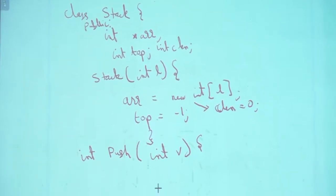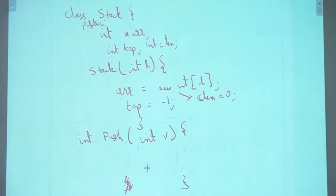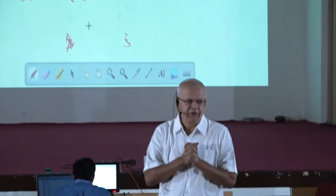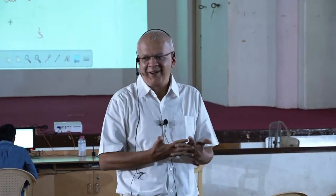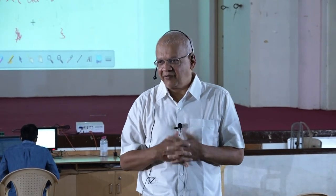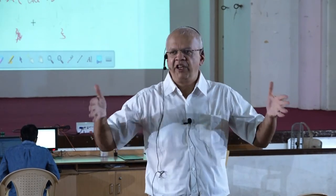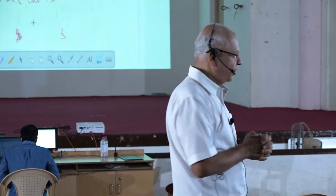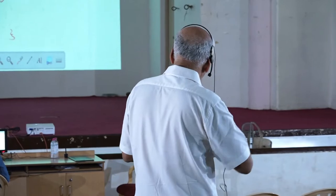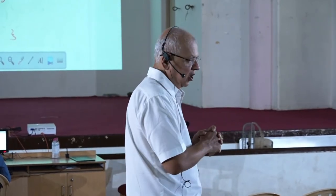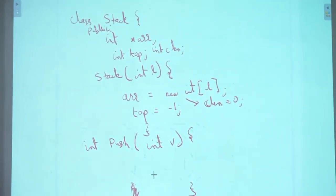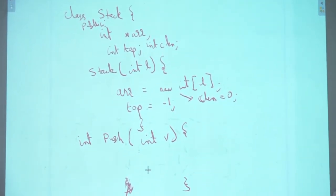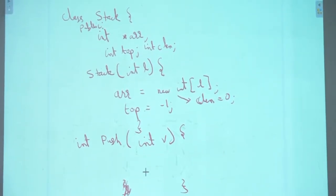What should be the body of push? First, we check: do we have space in the stack? That's the first thing we check — have we reached capacity? We would need a max length variable to compare against. We should maintain one more variable called capacity.